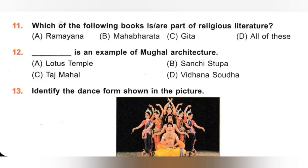12th. Which is an example of Mughal architecture? A. Lotus Temple, B. Sanchi Stupa, C. Taj Mahal, D. Vidhana Soudha. Taj Mahal is an example of Mughal architecture. It was built by Shah Jahan for his wife Mumtaz. Option C, Taj Mahal, is the correct answer.